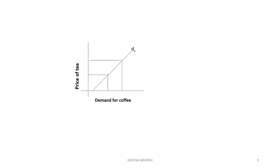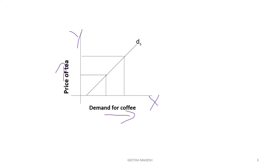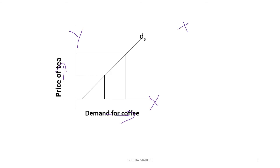Now let us discuss with the help of a diagram. On the x-axis, demand for coffee is measured; on the y-axis, price of tea is measured. As the price of tea increases, demand for coffee also increases. This indicates that the demand curve slopes upward, which has a positive slope. As the price of tea increases, tea becomes costlier and people start consuming more coffee.